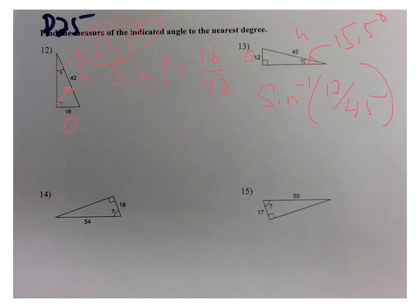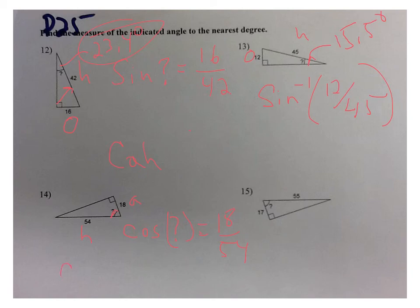This next one asks for an angle, but here they gave me the adjacent side and the hypotenuse. Remember that cosine uses adjacent over hypotenuse. I'll write it the long way: the cosine of that angle equals 18 over 54. Then we're going to arc cosine that — second cosine — of 18 divided by 54, entered right in the calculator. I'm getting 70.5 degrees.